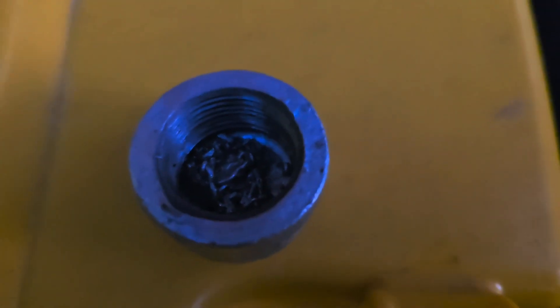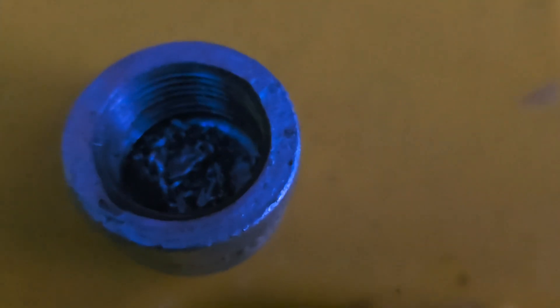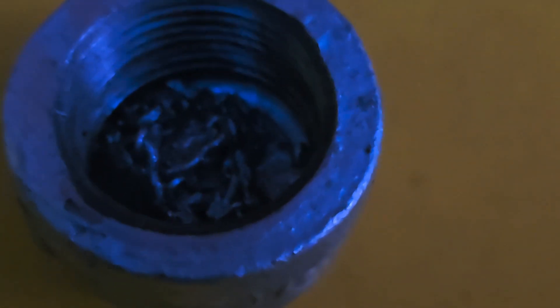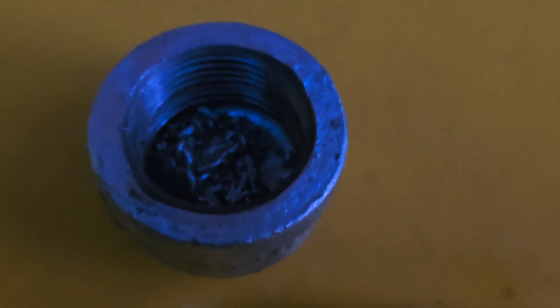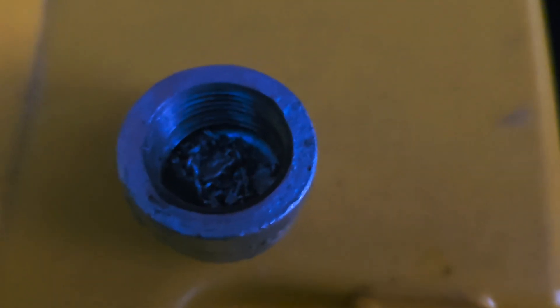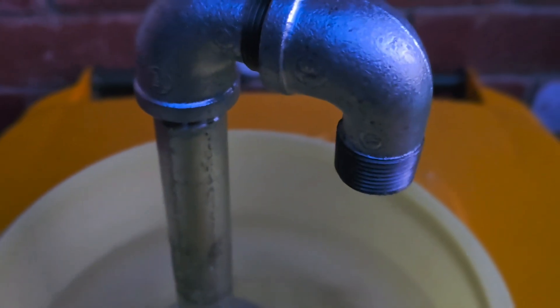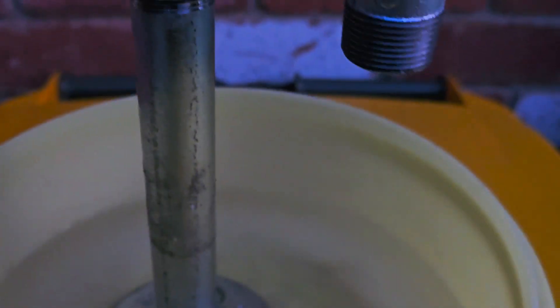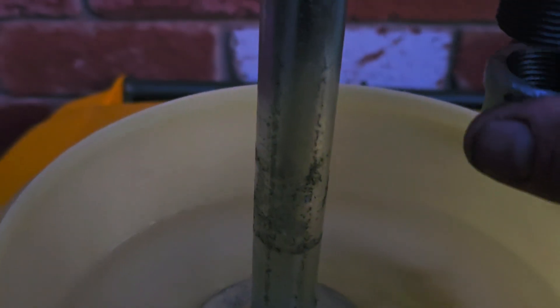Okay, so bit of amalgam, mercury-covered gold. This is the retort, pretty much a little base there. Pipe goes up, pretty much a U-shape. This is going to screw on here.